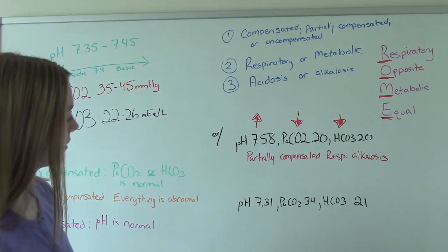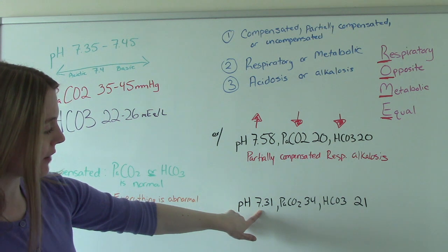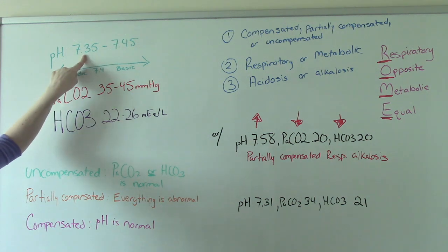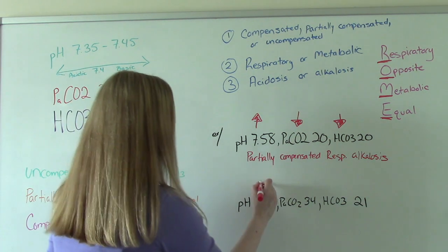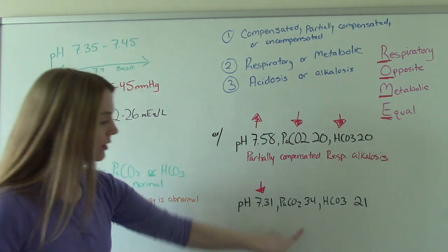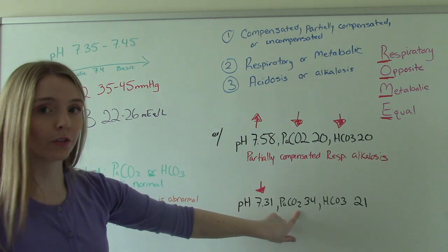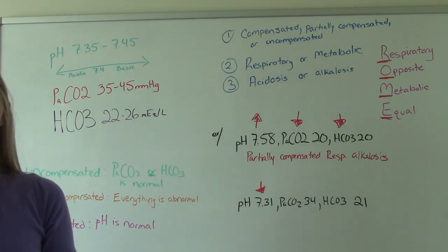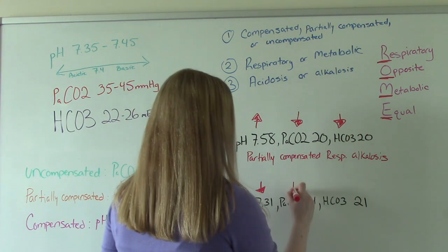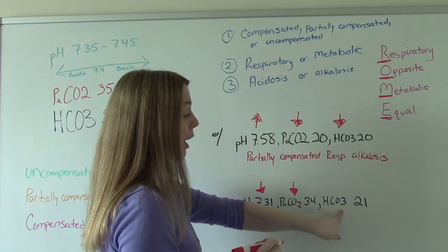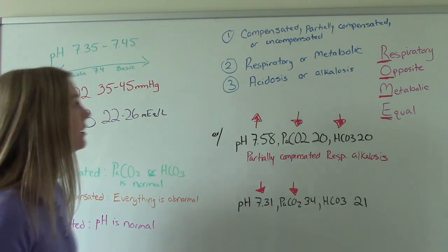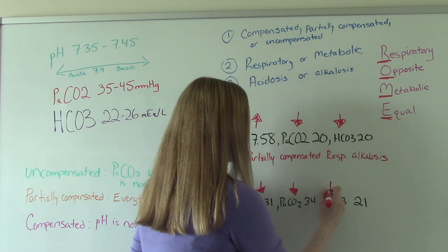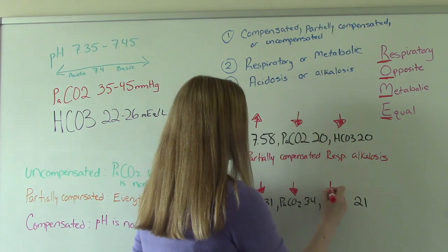Let's do another one. Our pH is 7.31 — that's out of range and on the low side. Our CO2 is 34; remember the normal range is 35 to 45, so it's close but not quite — it's out of range and also low. And our bicarb is 21; again, close but not quite — the normal range is 22 to 26, so it's out of range and low. So everything in this one is low.